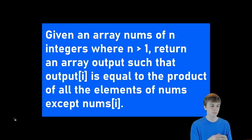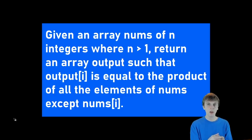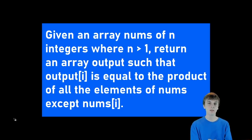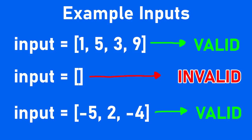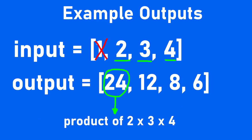Here's our problem today. Given an array nums of n integers where n is greater than one, return an array output such that output[i] is equal to the product of all elements in nums except nums[i]. So our input is going to be an array of numbers — it doesn't have to be sorted, it could have negatives and positives. We just know it's not going to be an empty array. For each index in that input, the corresponding index in the output array is going to be the product of every other element in the input array.